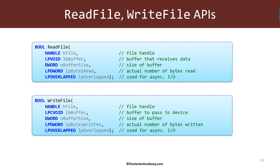After a successful call to CreateFile, we have a handle that targets the appropriate device. Now we want to send a request to that device, and this is typically done using three functions. The first two are ReadFile and WriteFile — the meaning of these functions is really reading and writing to some file object, some abstract representation of a device, which could be a file in the file system but doesn't have to be.